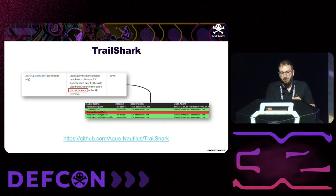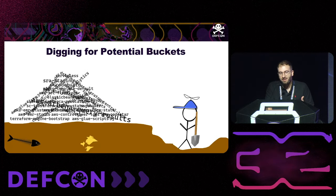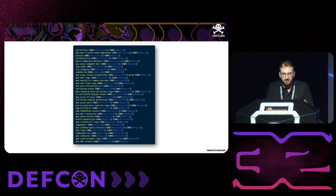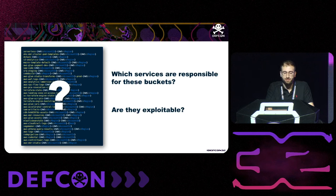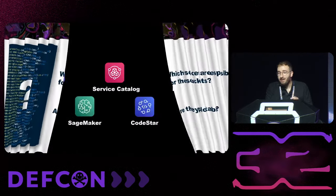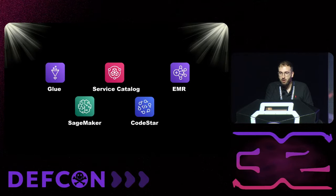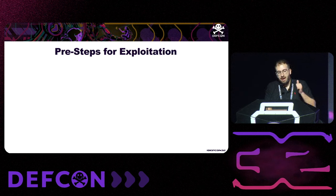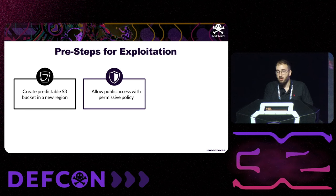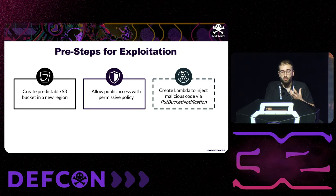All these techniques gave us hundreds of buckets to analyze. We needed to understand which bucket belongs to which service and whether any service was exploitable. The answer: we found five different vulnerabilities within AWS, some exploitable using just the account ID. The common steps across all vulnerabilities are: create the bucket name before the user does, open the bucket to the world, and put a Lambda to monitor the bucket and modify any dropped files.